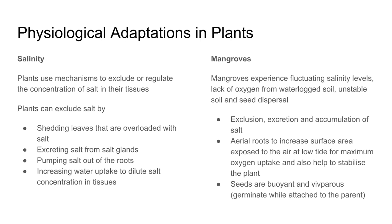Other adaptations allow plants to exclude or regulate their salt concentration in tissues, which is important for plants in high-salt environments. They can shed leaves overloaded with salt, excrete salt from salt glands, pump salt out through their roots, or increase water uptake to dilute salt concentration. Mangroves are an example — they experience fluctuating salinity, lack of oxygen from waterlogged soil, and unstable soil. They have mechanisms to exclude, excrete, and accumulate salt, aerial roots to increase oxygen uptake at low tide, and buoyant, viviparous seeds that germinate while attached to the parent.